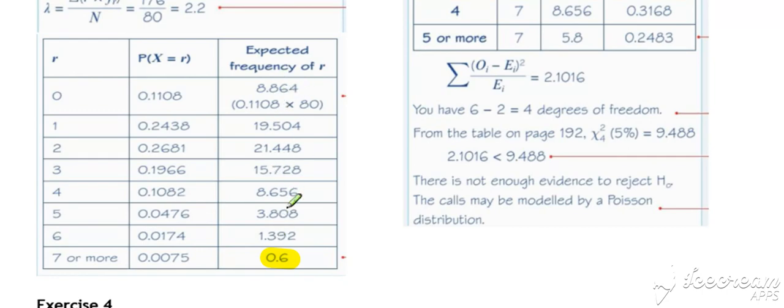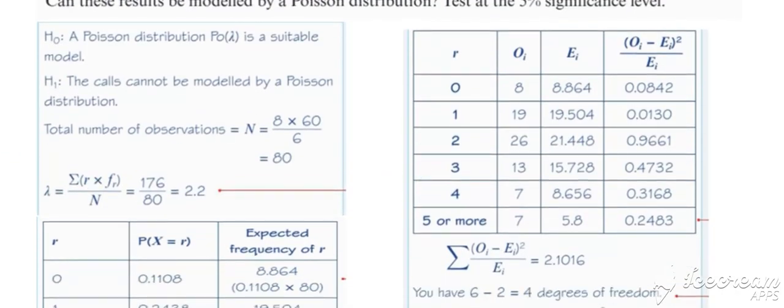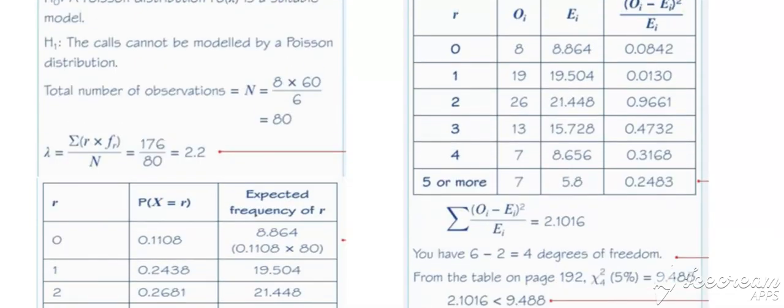So the expected, it's important that our expected values come to the same total that our observed come to. So that last one's just worked out by doing one minus all of the others. And then again, notice that even though we've done that, we've still ended up with expected frequencies less than five. So we need to make sure we combine the cells for five or more to ensure that the expected frequency is greater than five. Now we're set up to do our normal goodness of fit test.